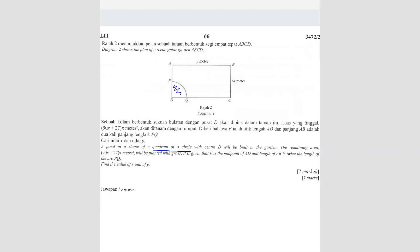So this is one quadrant of a circle. The remaining area here is given by 90X plus 27π, this is the area, will be planted with grass. It is given that P is the midpoint of AD. So we know that this is a rectangle, so here will be 3X, here will be 3X. So the radius of this quadrant is also 3X.